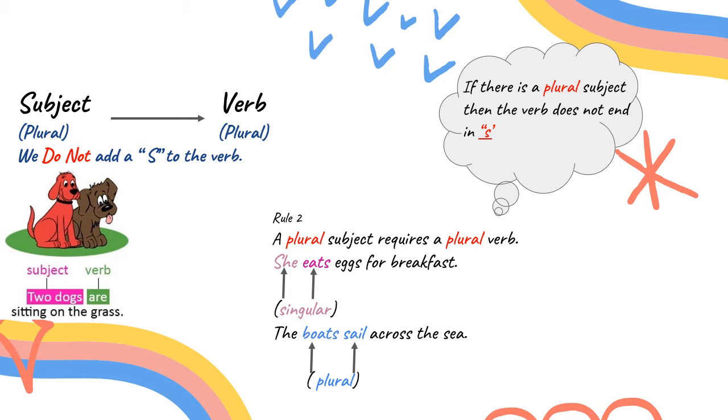For example, she eats eggs for breakfast. She is singular, so we add S to eats. The boats sail across the sea. The boats is plural, so we do not add S in sails.